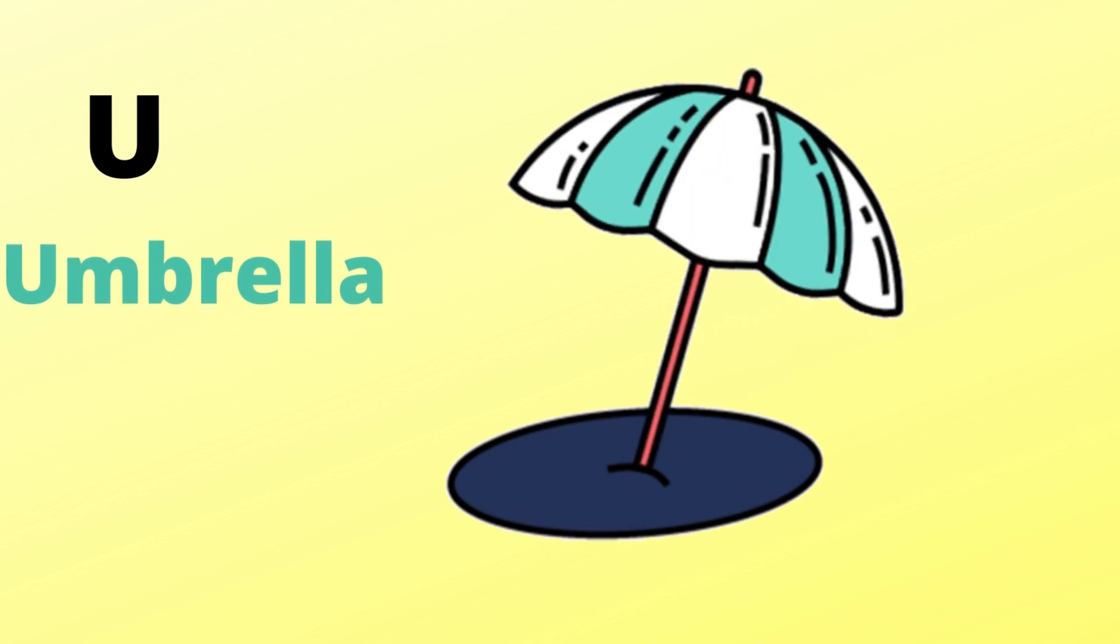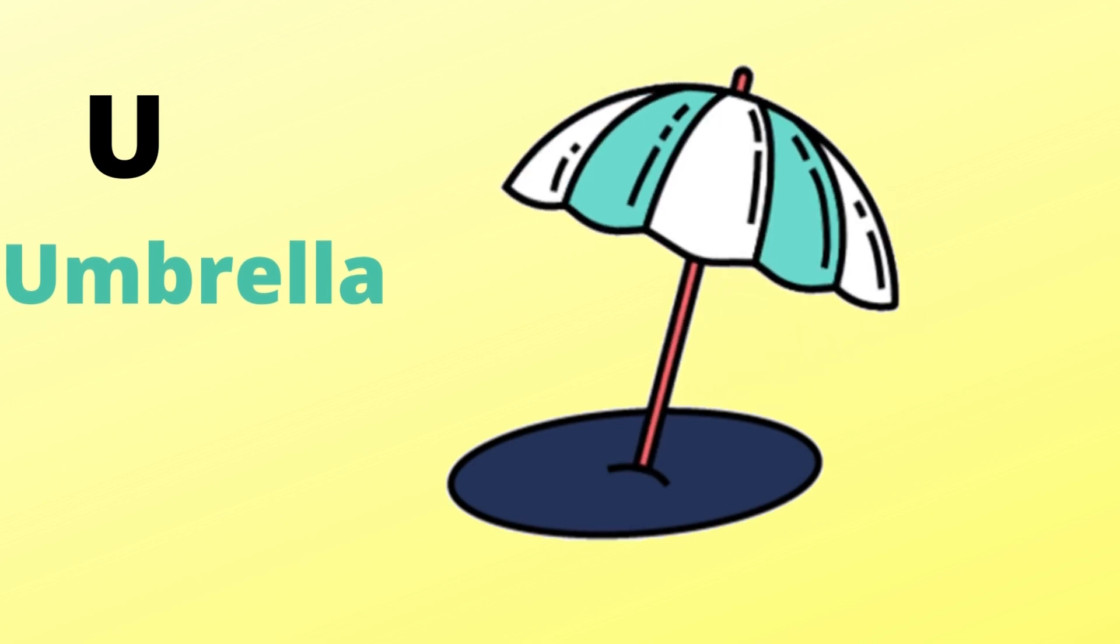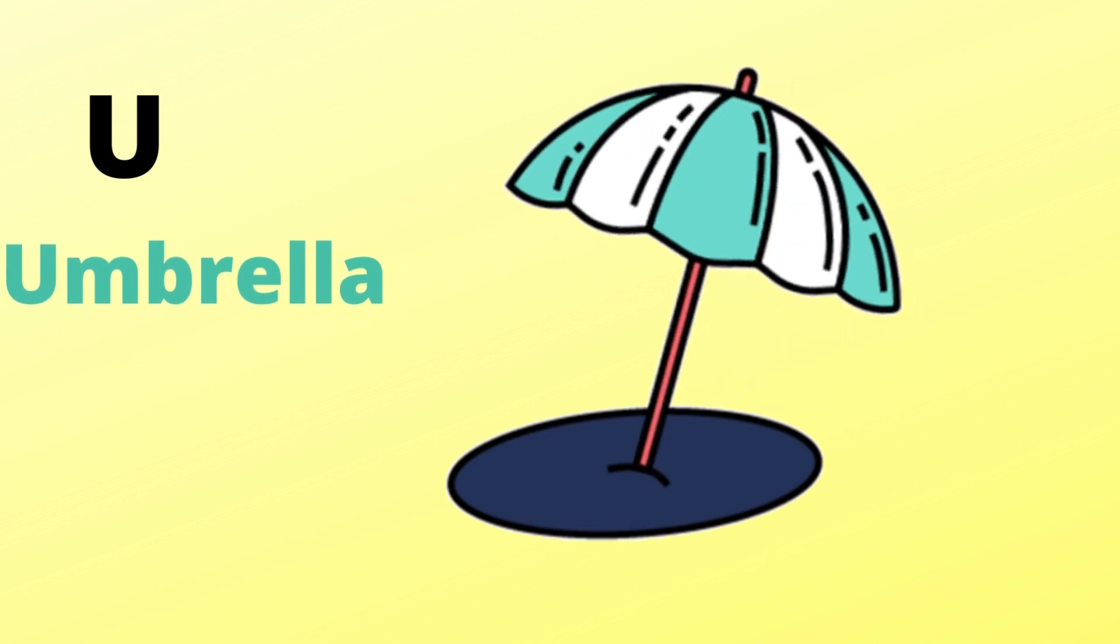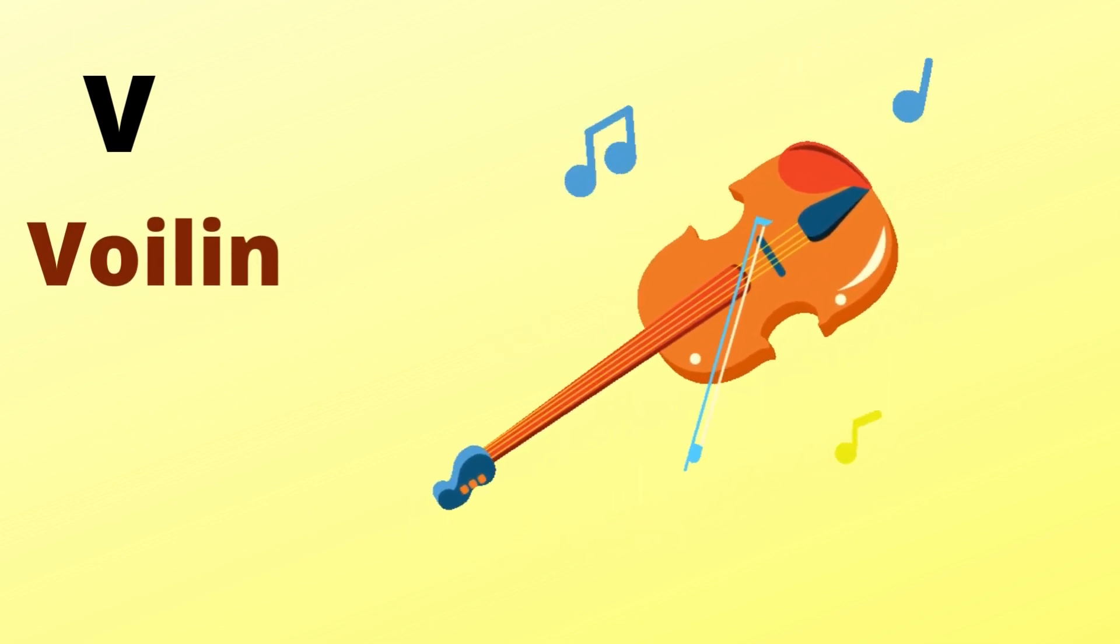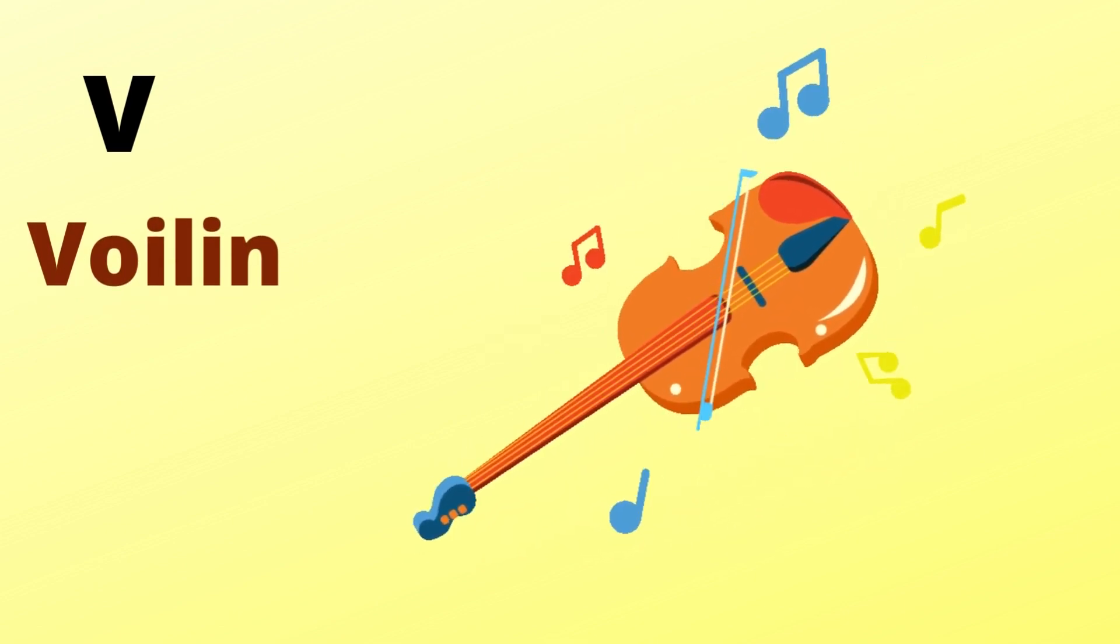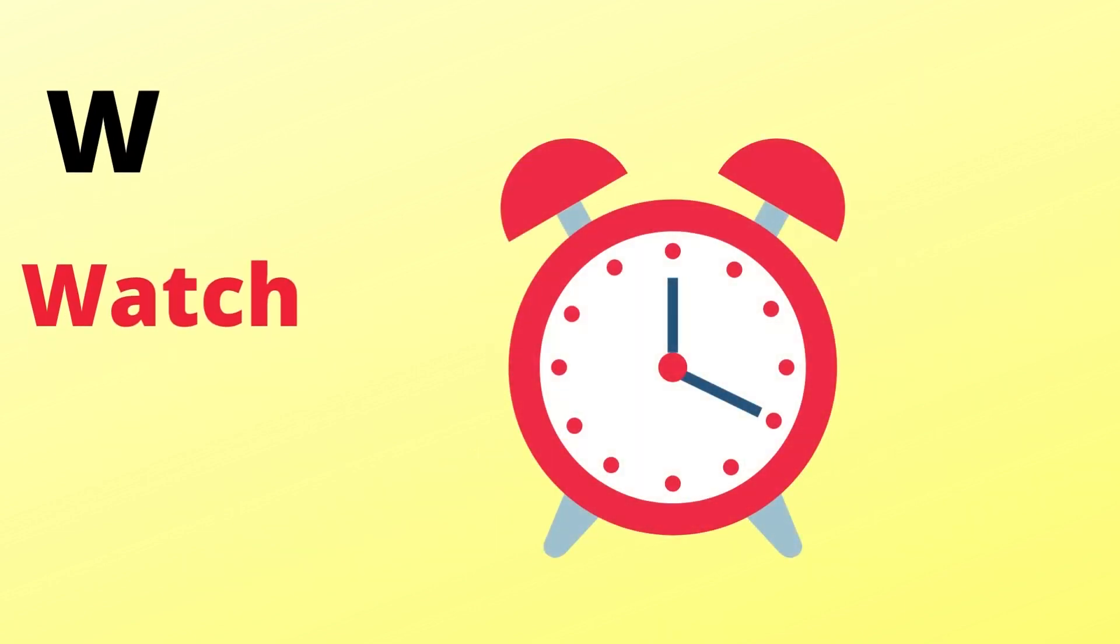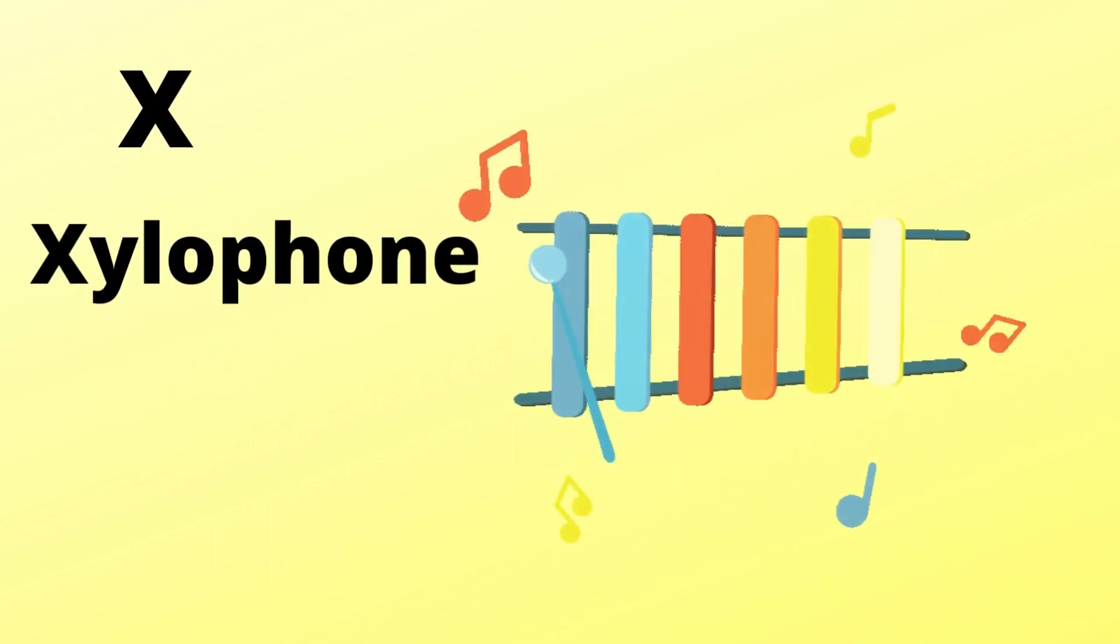U is for umbrella, u-u-umbrella. V is for violin, v-v-violin. W is for watch, w-w-watch. X is for xylophone, x-x-xylophone.